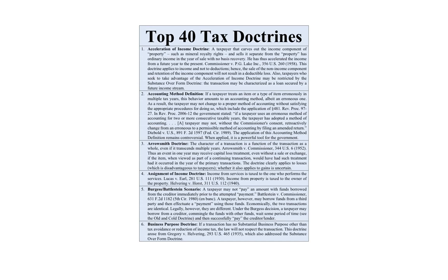So this is the top 40 tax doctrines. When looking at the top 40 tax doctrines, it's important to look at the top tax cases — I have a video on that topic — the top 50 tax cases, and also the top 100 code sections. Look at those first because a lot of stuff referenced in the top 40 tax doctrines focuses on those elements. You're going to see that some of the top 50 cases are actually a doctrine because they rise to the level where they apply generally. For example, the Aerosmith doctrine is from the Aerosmith case, and that was something we talked about in the top 50 tax cases.